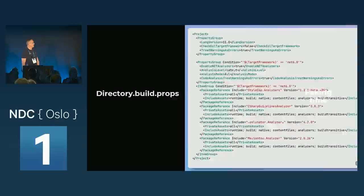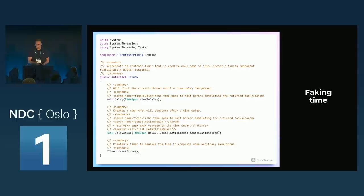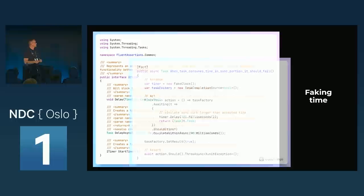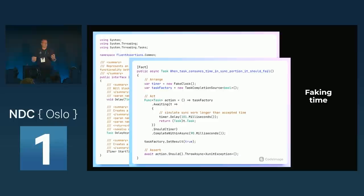Faking time — we have a lot of methods dealing with time, clocks, and delays, and I use the same concept at client projects. We created a little abstraction using delegates so you can have a dummy implementation in your tests. This makes it so you don't have to put Thread.Sleep calls in test code, which you should not do.